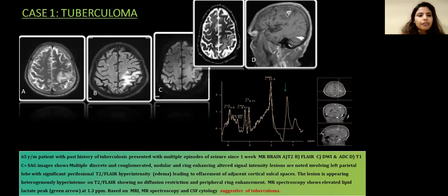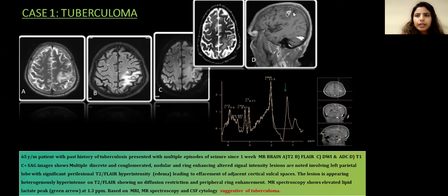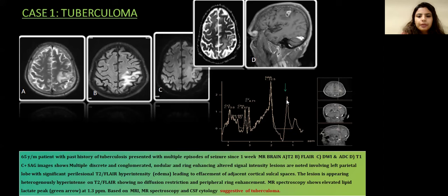Moving on to the first case: a 65-year-old male patient with past history of tuberculosis presented with multiple episodes of seizure since one week. MR brain was performed. T2 axial, FLAIR axial, diffusion-weighted images, and contrast images showing multiple discrete and conglomerated nodular and ring-enhancing altered signal intensity lesions involving the left parietal lobe, appearing T2 and FLAIR hyperintense with significant perilesional edema and no diffusion restriction. On MR spectroscopy, there is a lipid lactate peak. Based on MRI, MR spectroscopy, and CSF cytology, findings are suggestive of tuberculoma.